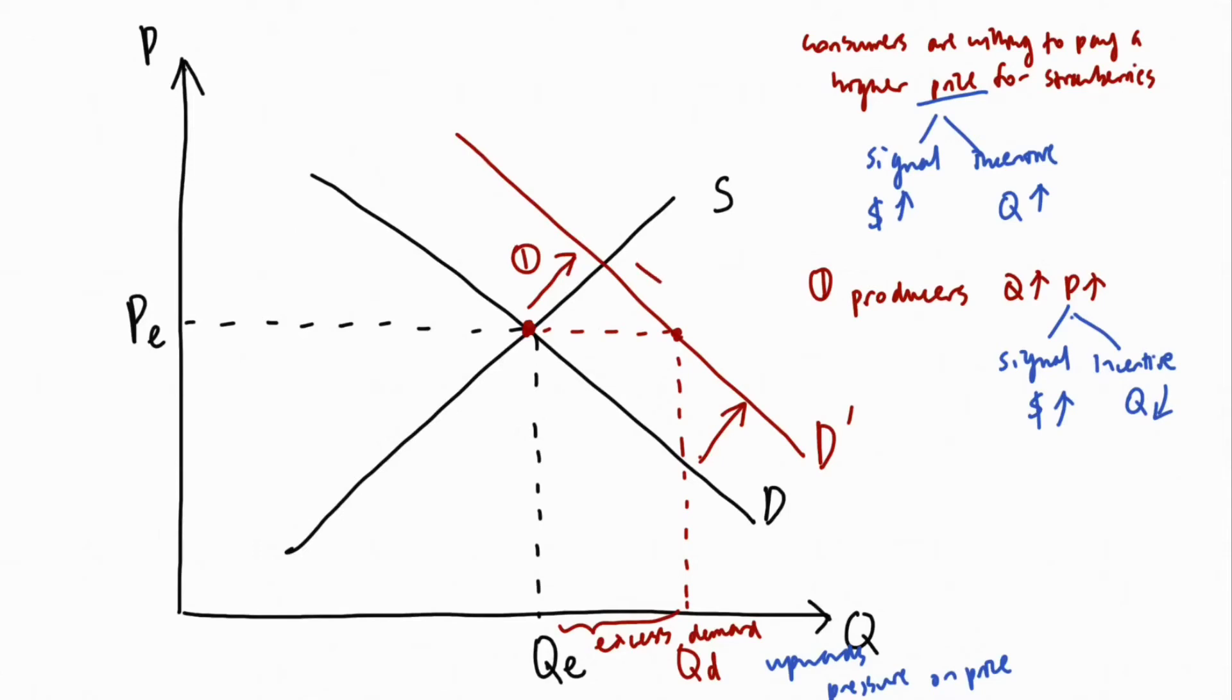This is shown by a leftwards movement along the demand curve where consumers are willing to buy less strawberries and pay not so high a price.